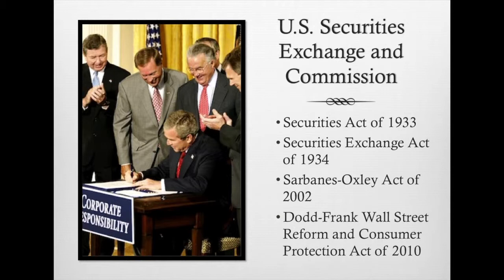President Bush signed the Sarbanes-Oxley Act into law on July 30, 2002, in response to accounting scandals such as Enron. The act enforced more strict and effective internal controls to combat corporate and accounting fraud. The Public Company Accounting Oversight Board was also created under the act to oversee the activities of the auditing profession. Most recently, President Obama signed the Dodd-Frank Wall Street Reform into law on July 21, 2010, placing major regulations on the financial industry.